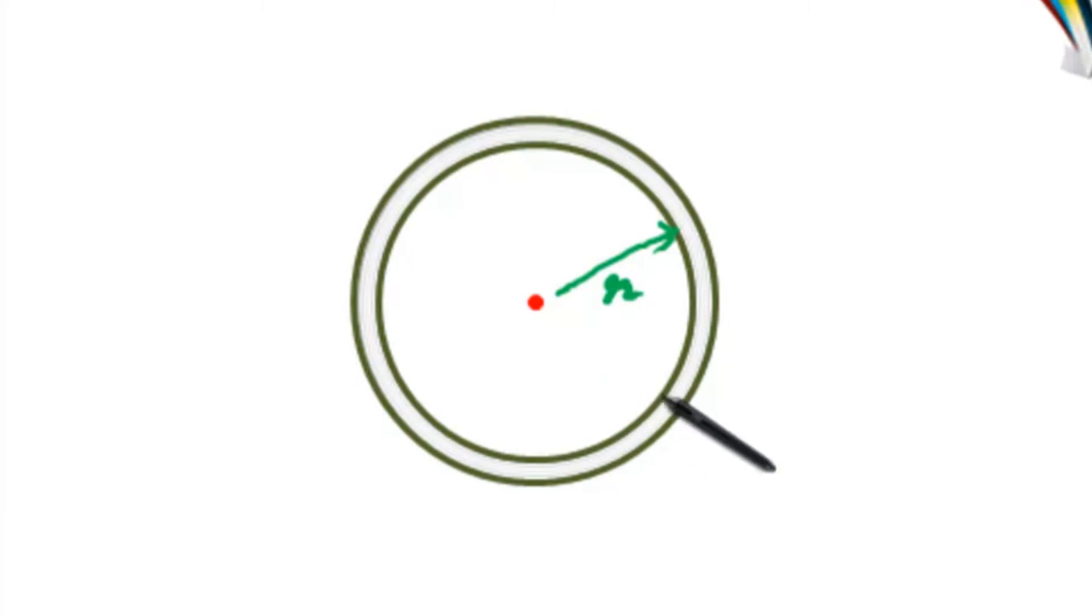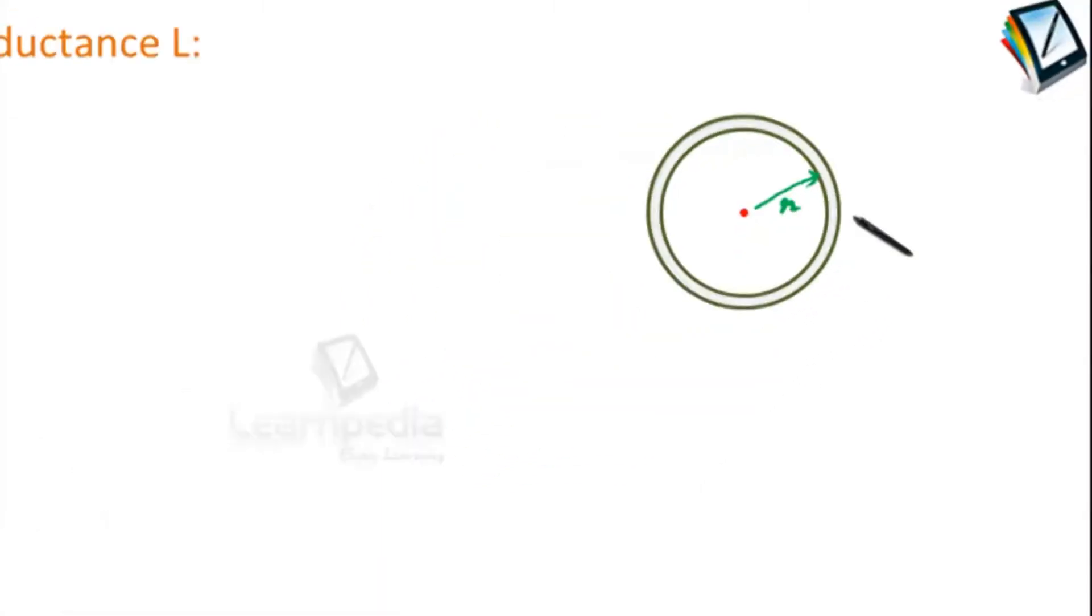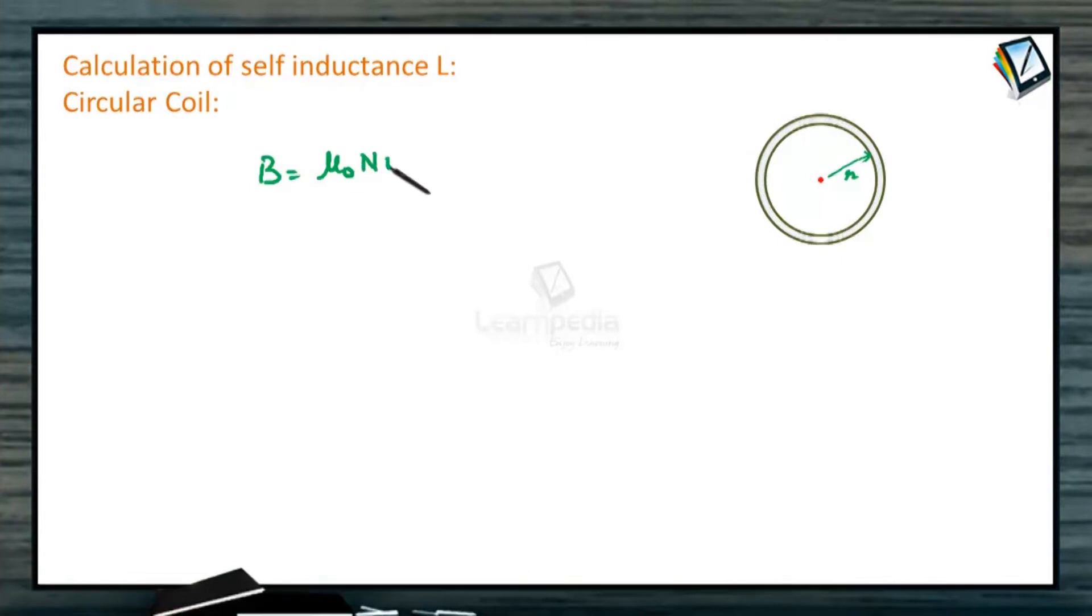Suppose it carries a current I. The magnetic field due to this current will be B equals μ₀Ni divided by 2R. This is by Biot-Savart law what we have studied earlier.